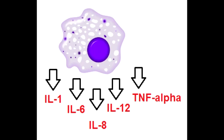What is interleukin-6? Interleukin-6 is an endogenous pyrogen, which is also secreted by T-helper-2 cells. It causes fever and stimulates the production of acute phase proteins.